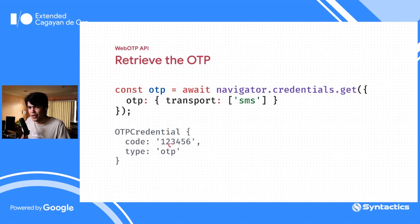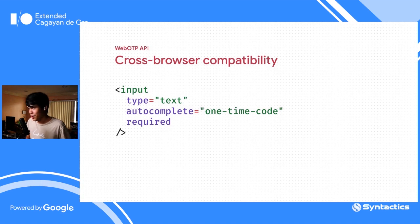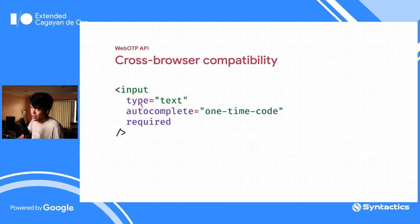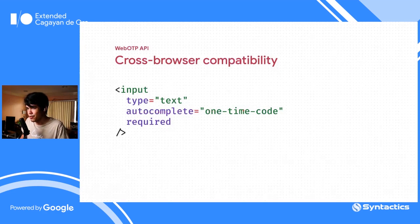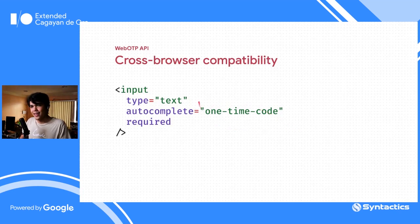For cross-compatibility with iOS: iOS doesn't support the JavaScript WebOTP API, but annotating the OTP input field with autocomplete='one-time-code' lets Safari automatically suggest the OTP from the keyboard when the SMS arrives, filling the input when the suggestion is tapped.